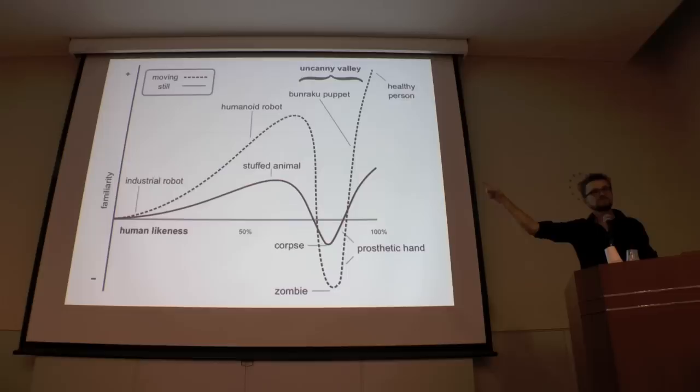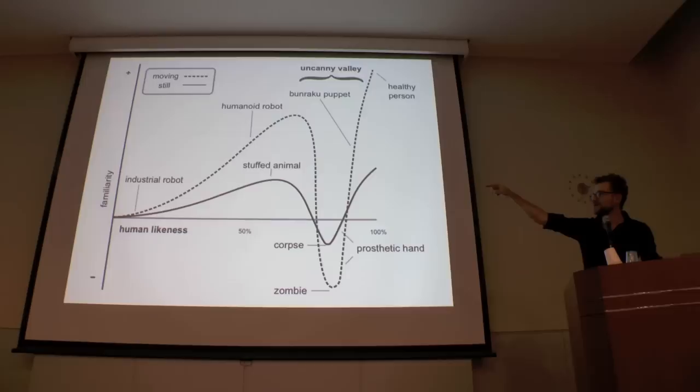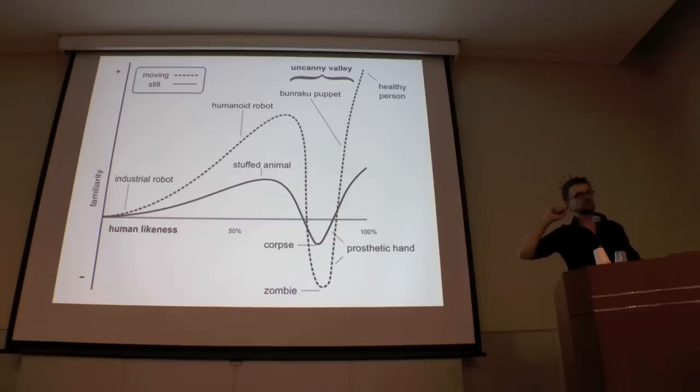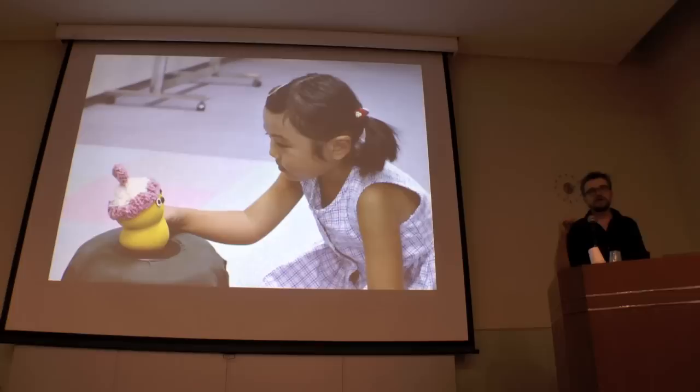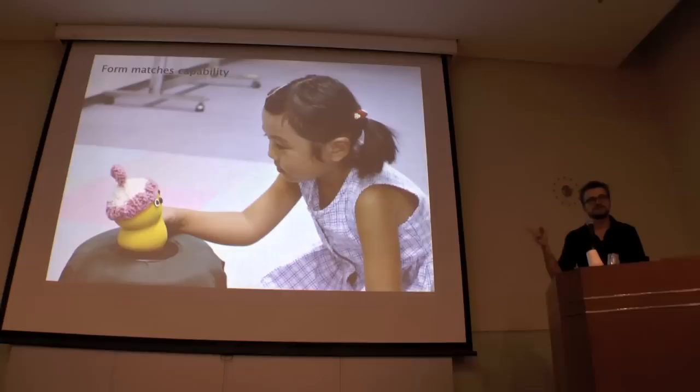So, interestingly enough, he was taking something that was already left of the uncanny valley, and moved further left, and created something lower on the human likeness scale, but created something toward which children had higher affinity. So, what's up with that? I propose that there are a few reasons why that's a good idea.